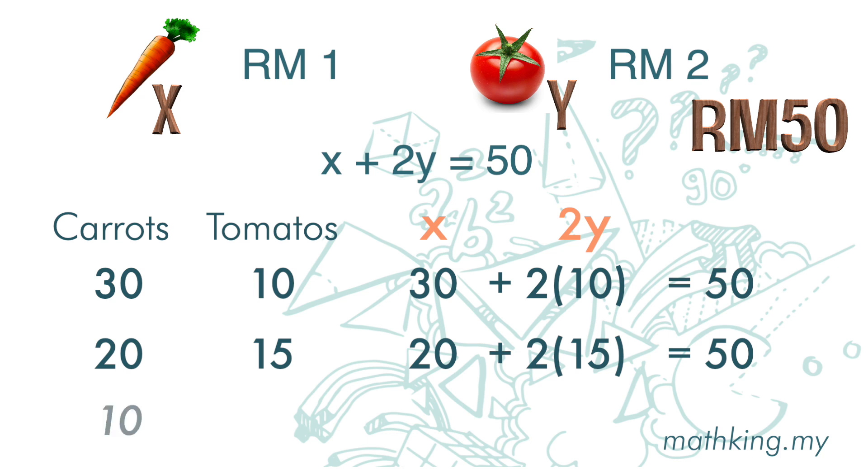If you buy 10 carrots, you can still buy 20 tomatoes. 10 carrots is 10 ringgit. For tomatoes, 2 times 20 we get 40. Total is 50.